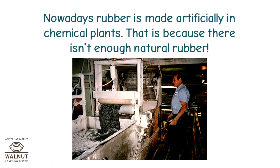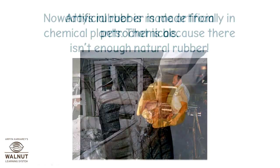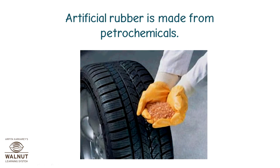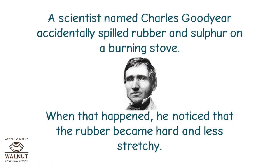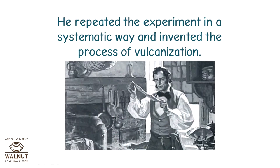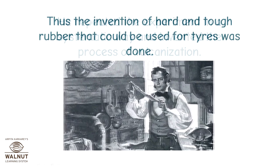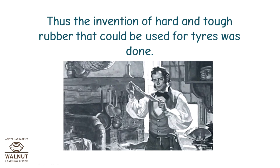Nowadays rubber is made artificially in chemical plants, because there isn't enough natural rubber. Artificial rubber is made from petrochemicals. A scientist named Charles Goodyear accidentally spilled rubber and sulfur on a burning stove. He noticed that the rubber became hard and less stretchy. He repeated the experiment in a systematic way and invented the process of vulcanization.